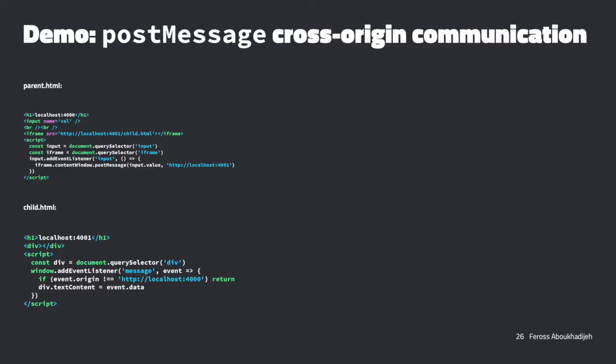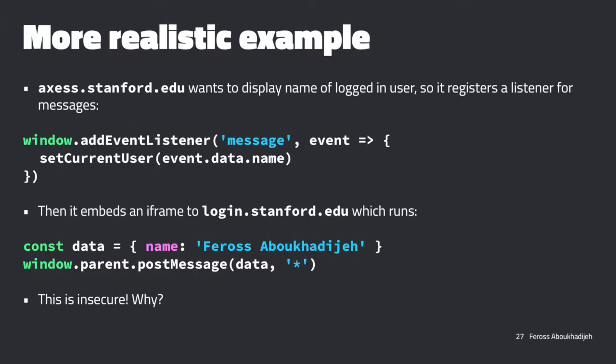A realistic example of this would be: say access.stanford.edu wants to display the name of a logged-in user, and it's going to find out that information from login.stanford.edu, which is on a different origin. Remember, origin is the tuple of protocol, host, and port. So access.stanford.edu and login.stanford.edu are separate origins. To do this communication, we use postMessage. Access listens for a message expecting to be told the username, then embeds an iframe to login.stanford.edu, and the first thing that iframe does is post a message to its parent.